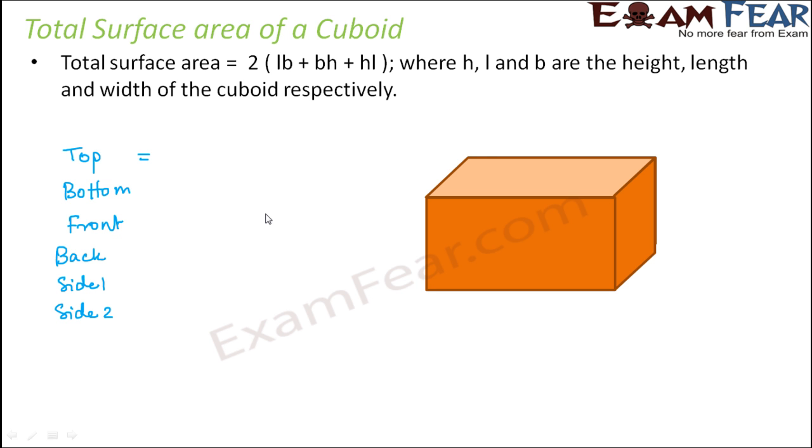What would be the surface area of the top? This is the top surface. For the top surface, this is the length, let's call it L and this is the breadth. The area of the top surface would be area of a rectangle that is length into breadth, so this is the area of the top surface.